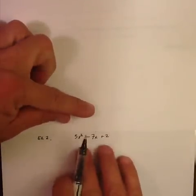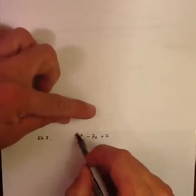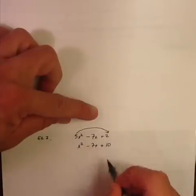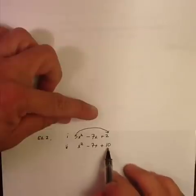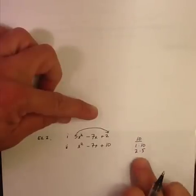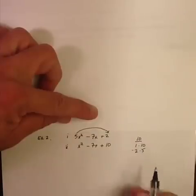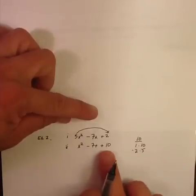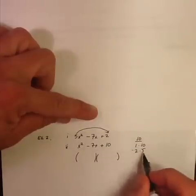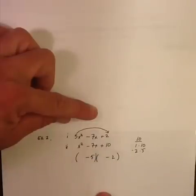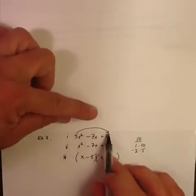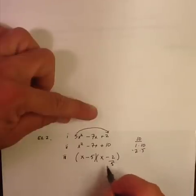Let's try another problem. The leading coefficient is something other than 1, and there are no common factors to factor out. So I'm going to multiply 5 times 2, and you end up with x² − 7x + 10. What are the factors of 10 that add up to negative 7? You go 2 and 5 — there's a 7, especially if I make both of these negative. I get positive 10 when I multiply, negative 7 when I add. So you put in the signs as they appear: minus 2 and minus 5. Take the square root of the leading term. And remember, since you multiplied by 5, now you divide by 5.